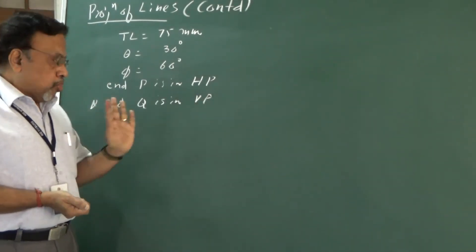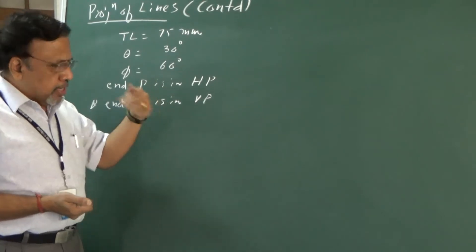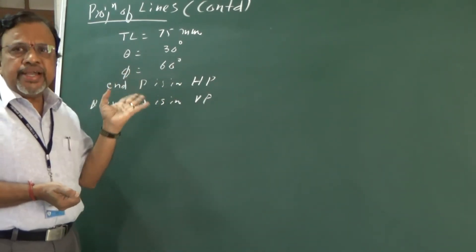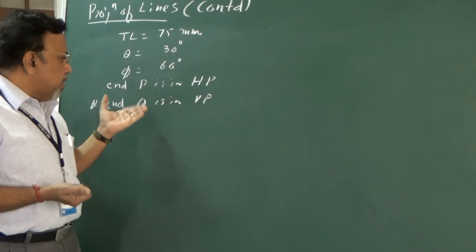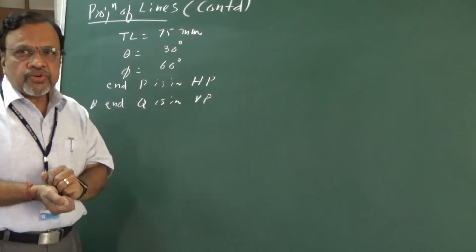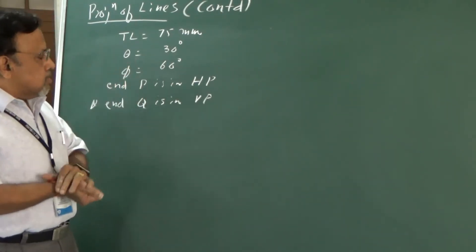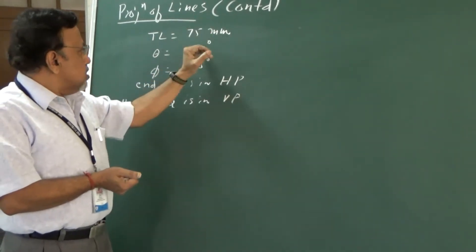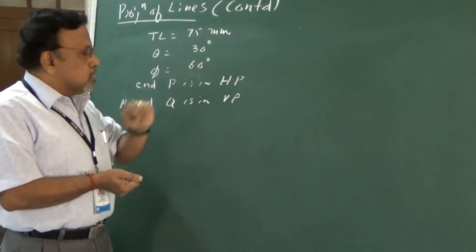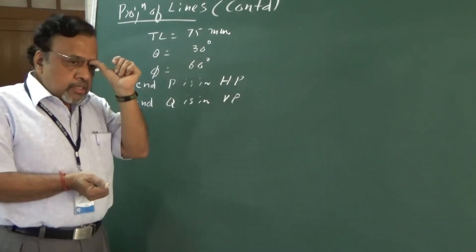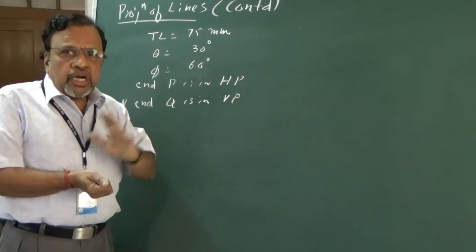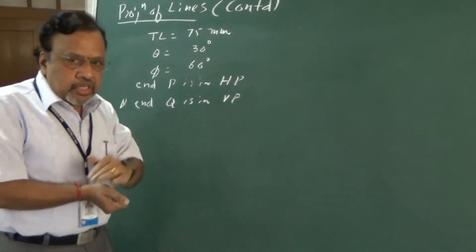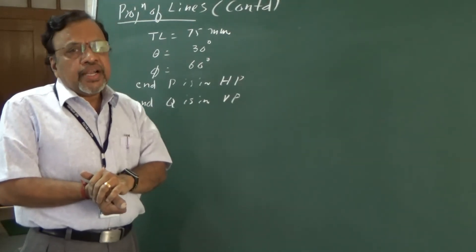This problem is exactly similar to what we have done previously, especially if I consider these ends — there I have given end A and end B, here I would have given end P and end Q. But notice there is one difference here. TL is 75, theta is given as 5 equal. But if you observe the combination of theta and phi given in problems we have already done, I have always given less than 90.